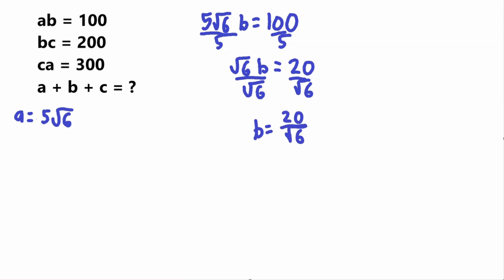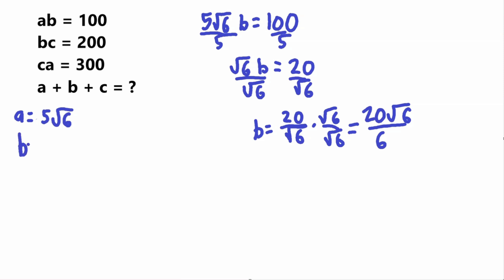It's considered unprofessional to have a square root in the denominator, so I'm going to rationalize by multiplying by √6 over √6, which equals 1. The denominator becomes √6 times √6 equals 6, and the numerator becomes 20 times √6. So our B value is equal to 20√6 over 6.